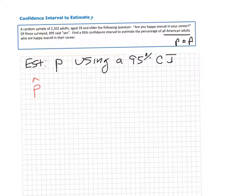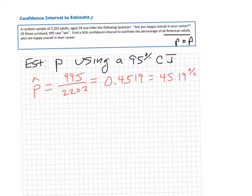That's your sample proportion, P-hat. Out of the 2,202 people surveyed, 995 said yes. So that's equivalent to 0.4519, or 45.19% said yes - they're happy overall in their career.